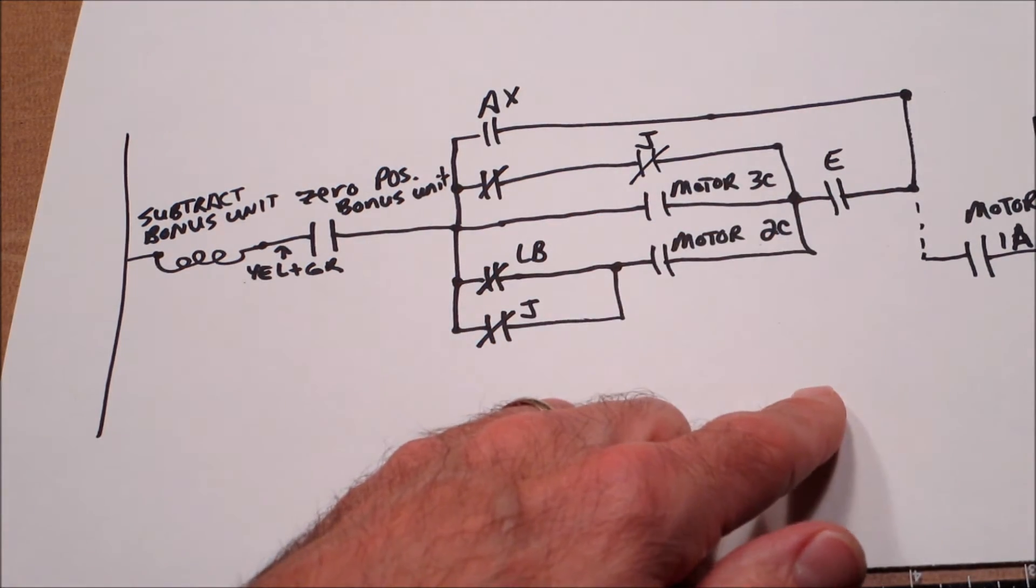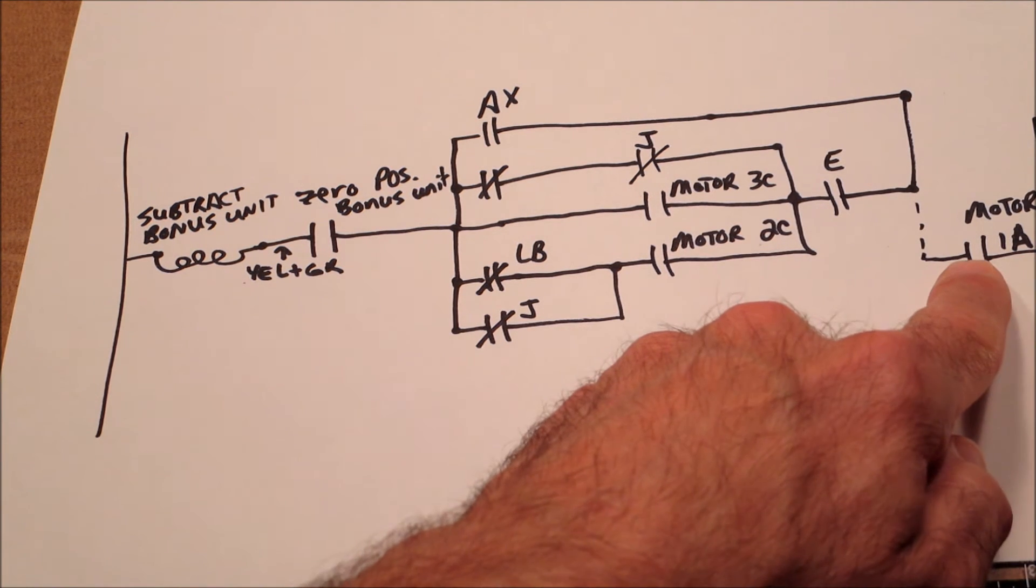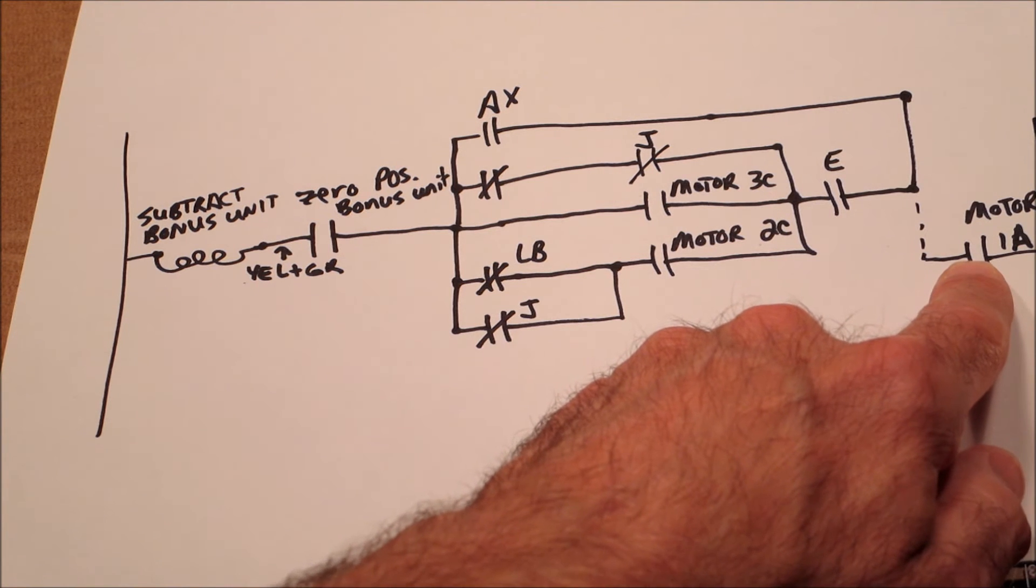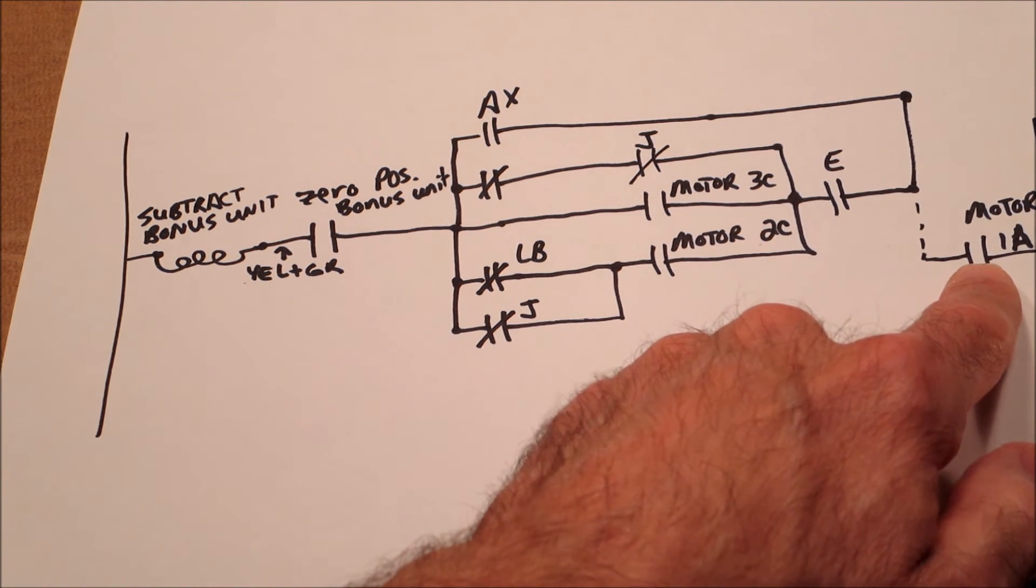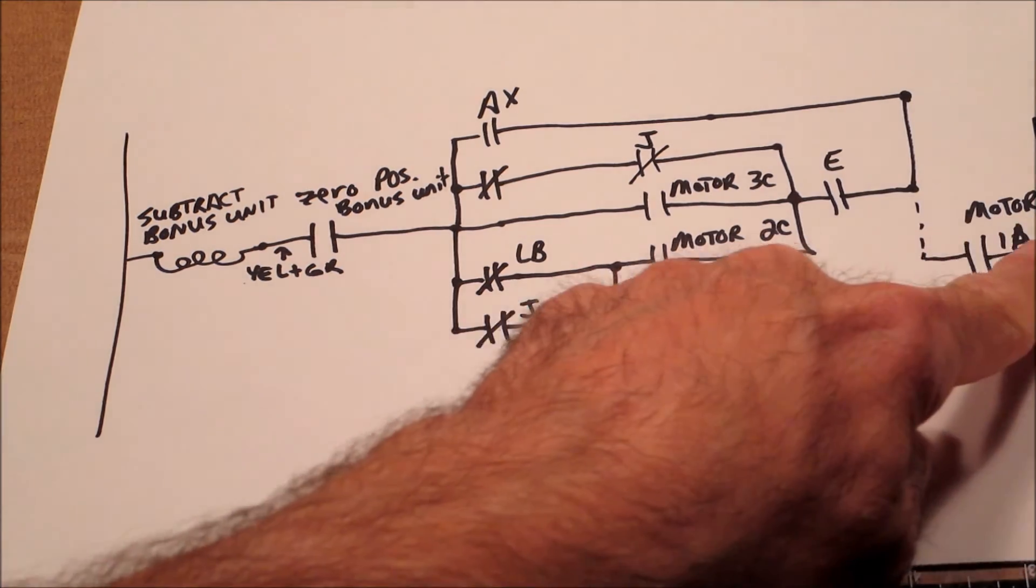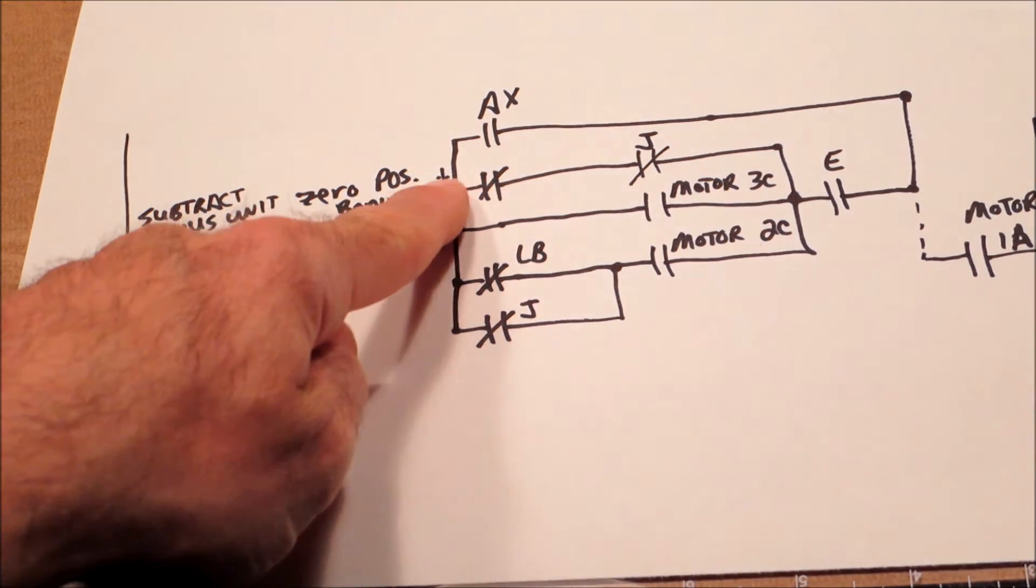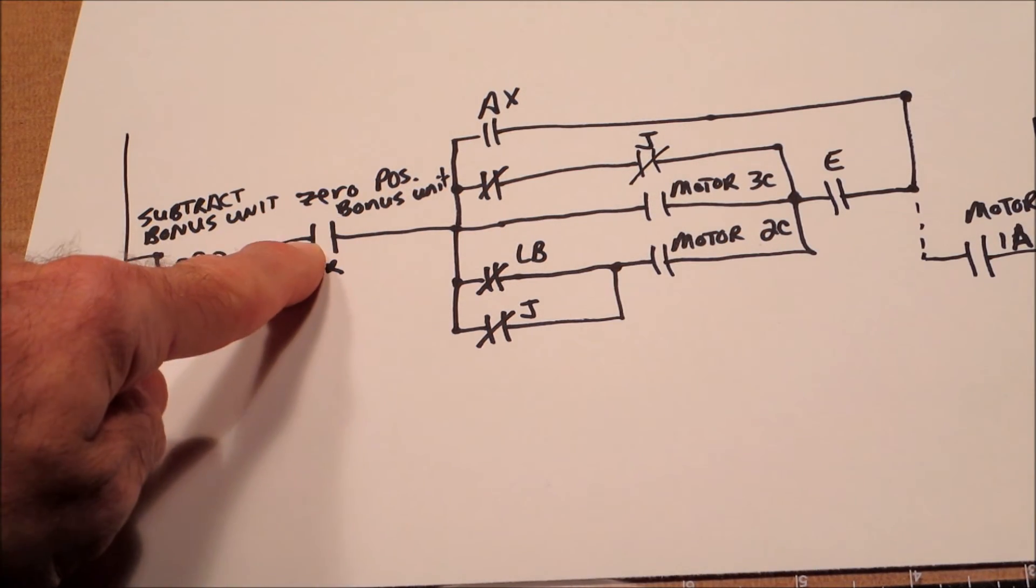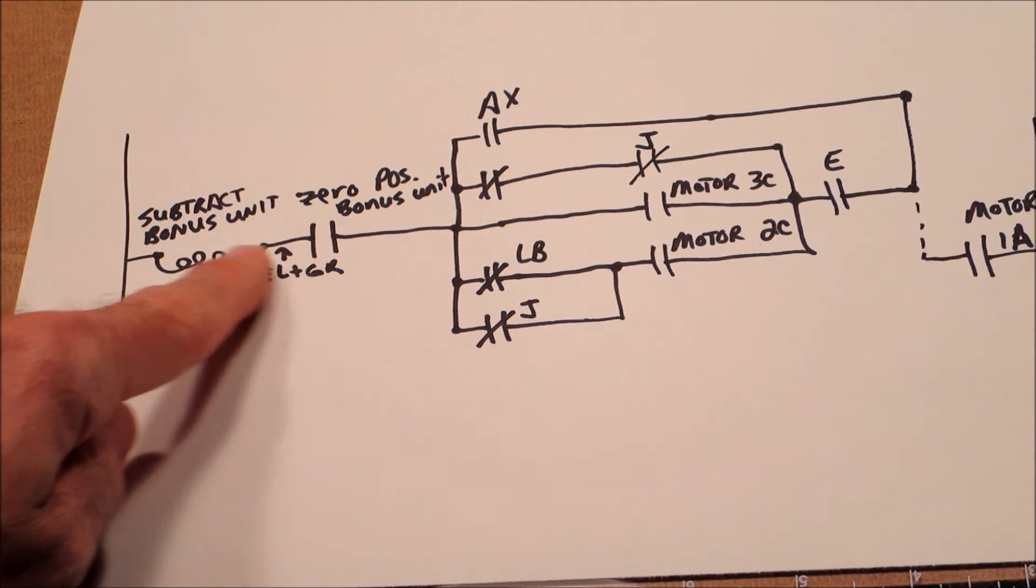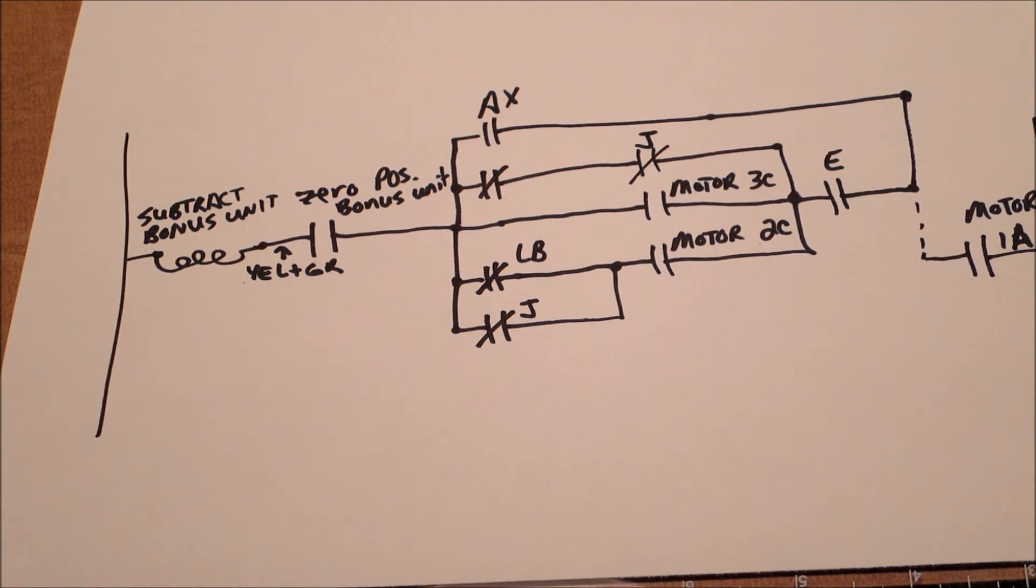So what you can see is since the score motor is running all the time until that's cleared, motor 1A is going to pulse. And we've seen that before. It pulses five times. And every time it pulses, you can see we now have a circuit through E because it's closed right now through here. And then if this was closed, if this switch was working right, it would run the subtract bonus unit.